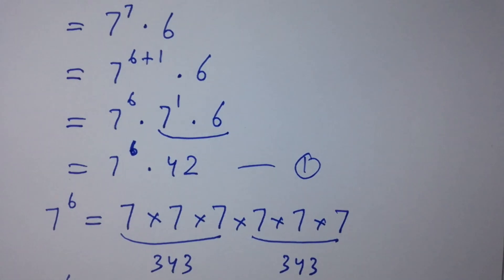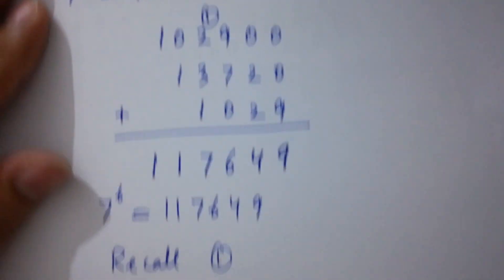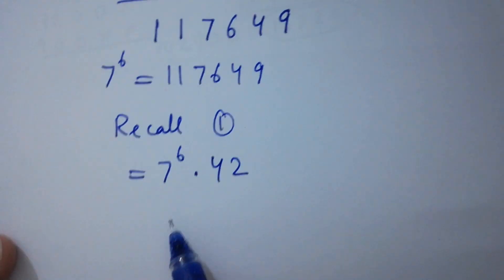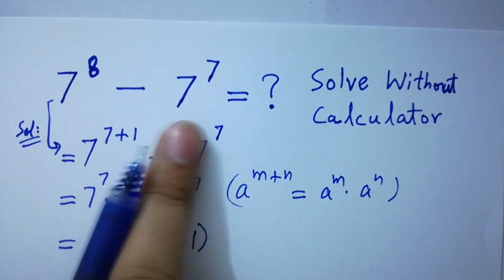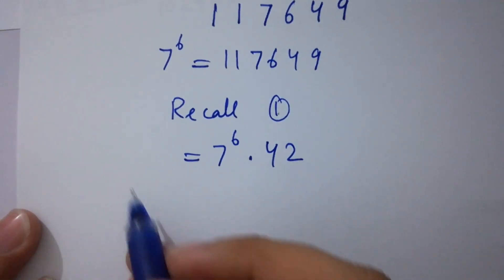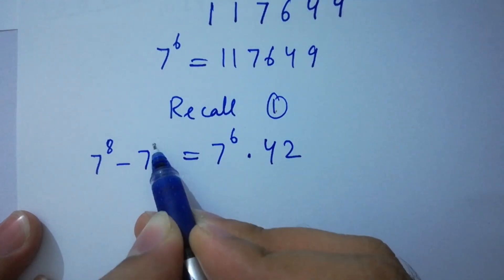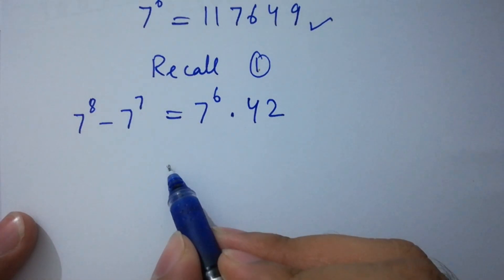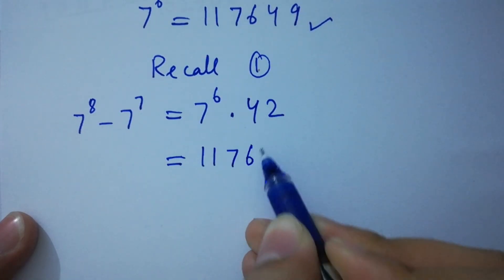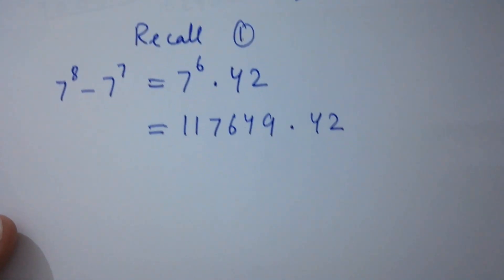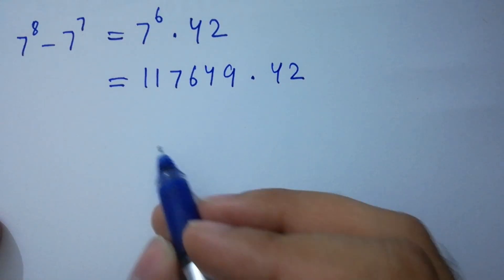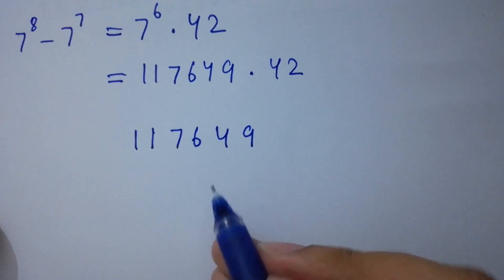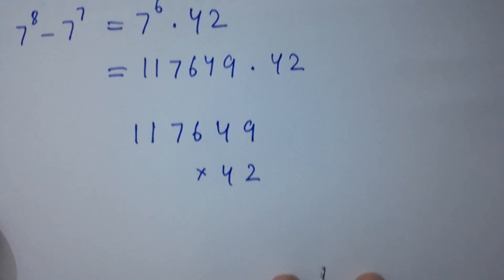Recalling the first equation, you can see 7 to the power 6 times 42, which equals 7 to the power 8 minus 7 to the power 7. Since 7 to the power 6 equals 117,649, we can write it as 117,649 times 42. In the next step I am going to multiply to get our answer.